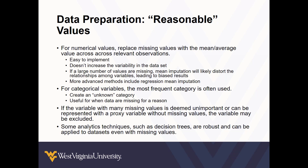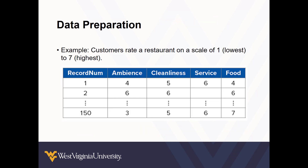There are also some analytics techniques, such as decision trees, which we'll get to later in the course. They're robust and can be applied to data sets even with missing values, which can be a very handy alternative if our initial study design does not quite work with the structure of the data. So let's take a look at how we might go about doing some data preparation by looking at the restaurants data set in R.